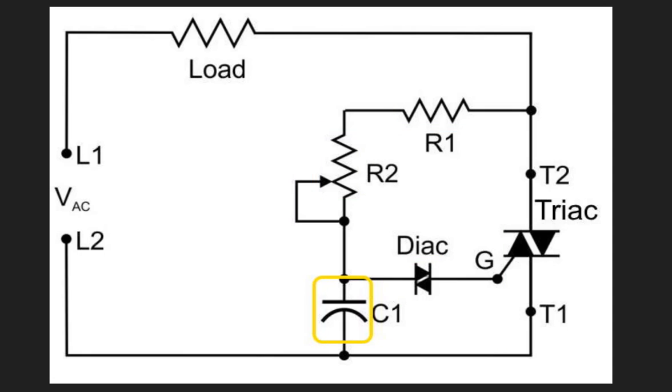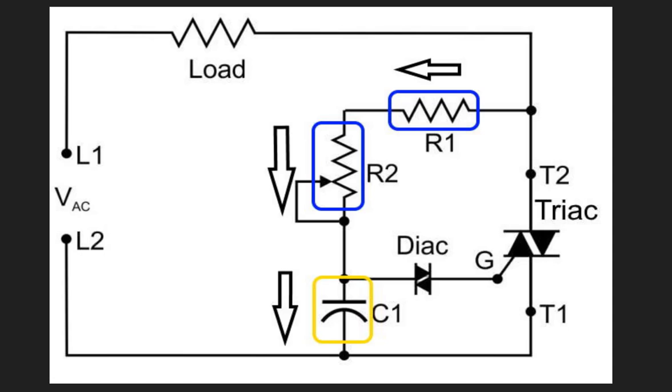C1 is charged via fixed and variable resistance supplied from R1 and R2. This will happen either in a positive or negative direction, and both halves of the sine wave are supplied by the AC input voltage.